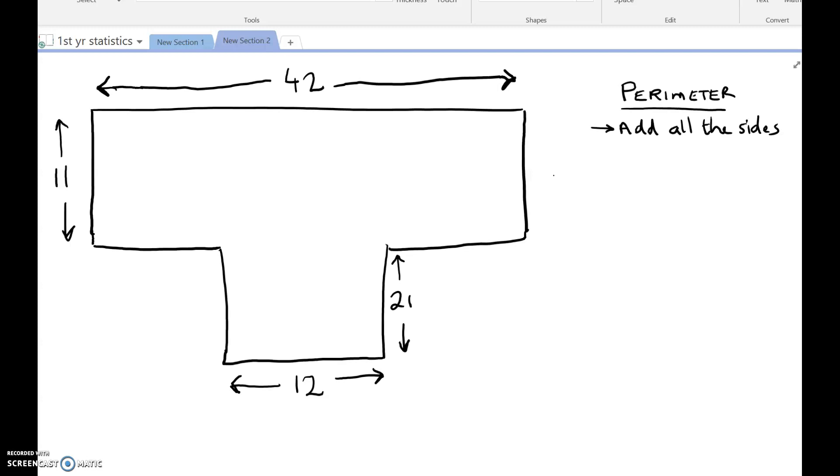Okay, to find a perimeter of this shape, how do you find perimeter? Well, you have to add all of the sides together. Now there's a problem with that because we have this side, we have this side, we have this side, and we have this side, but we don't have some of the other sides.